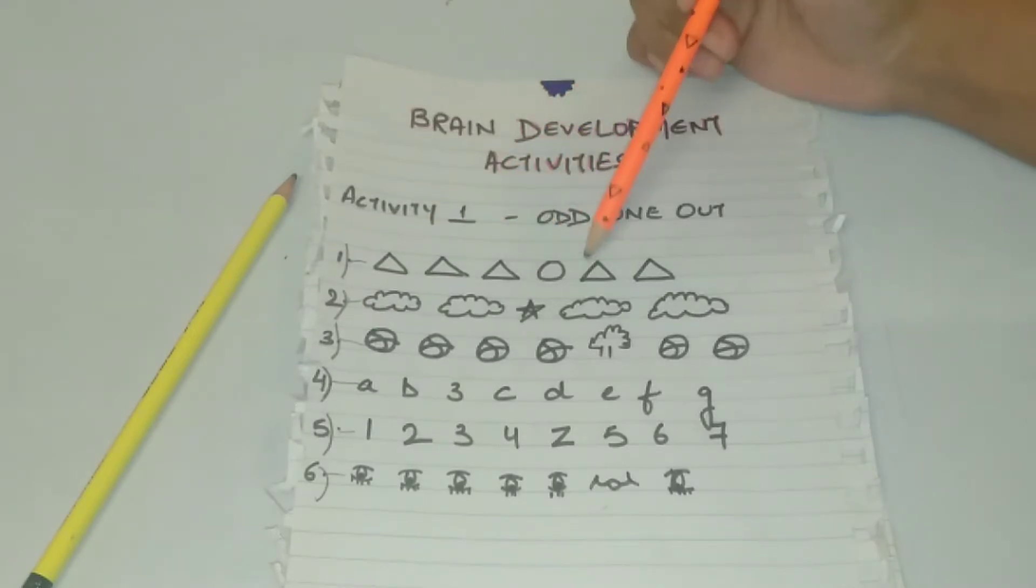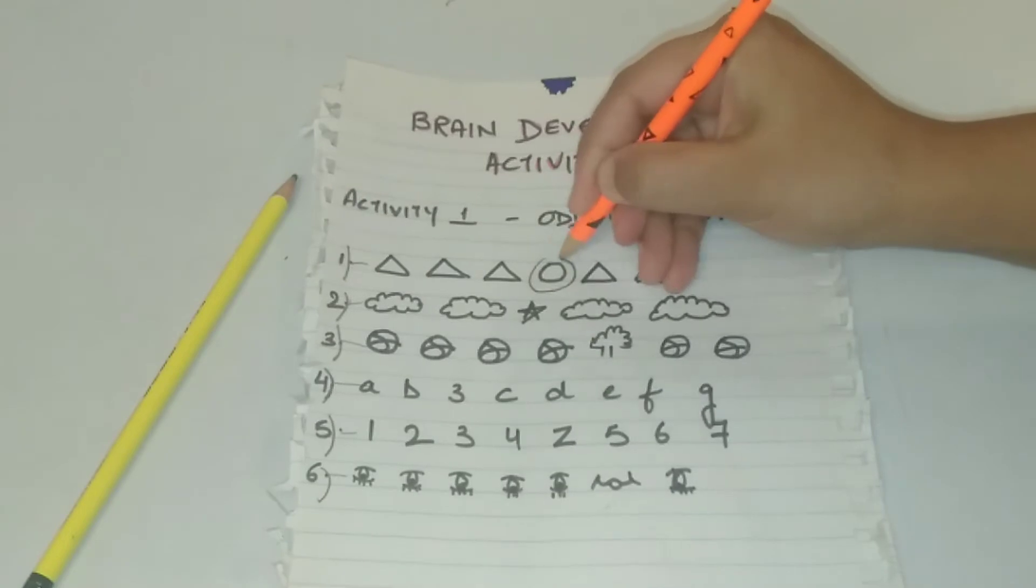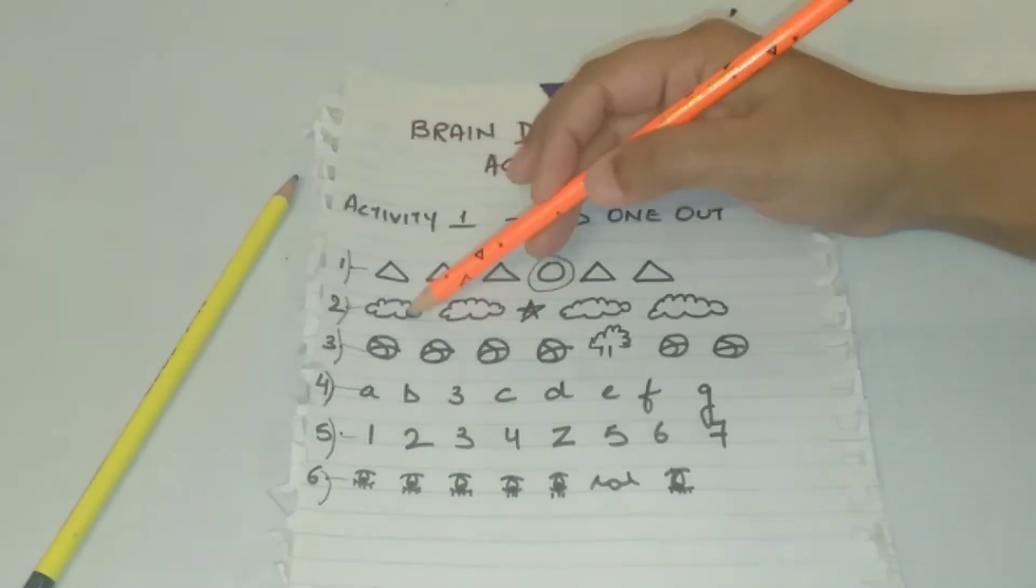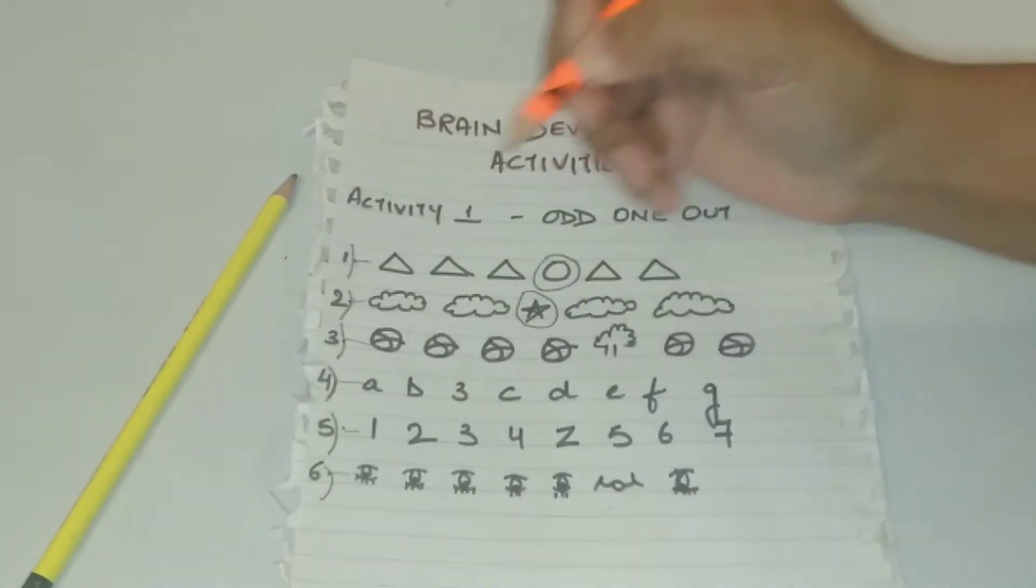So the first one is odd one out. Make a sequence and draw something which is odd from the other items and ask your kid to find the odd one out. This is quite a good activity.